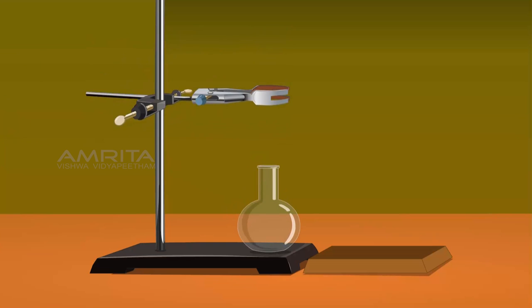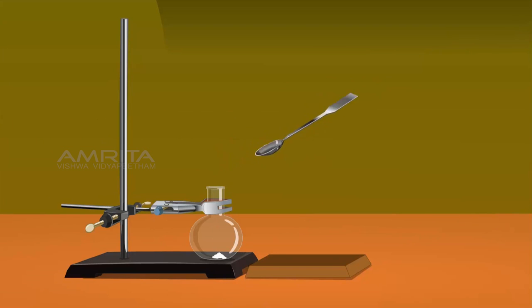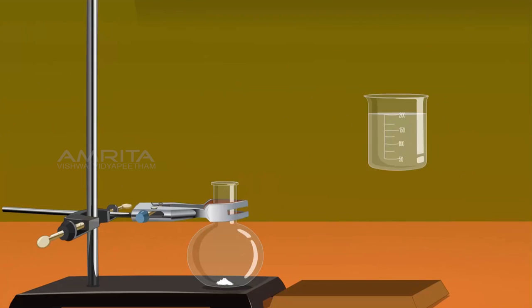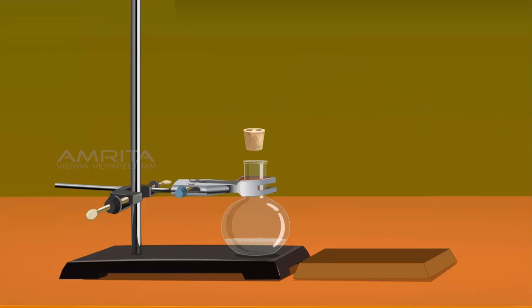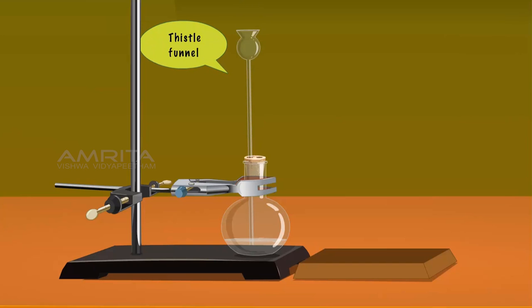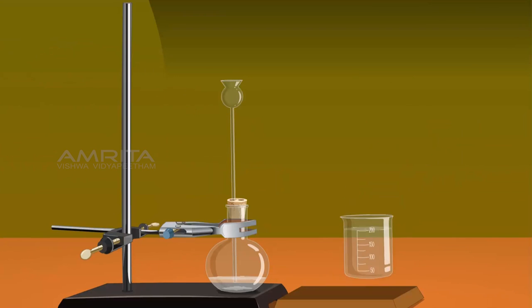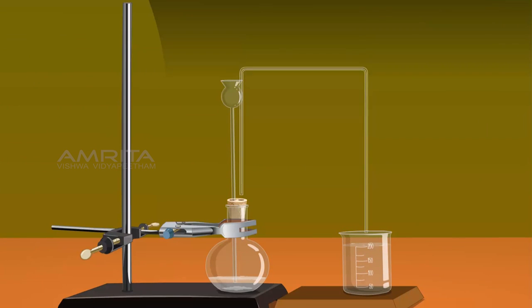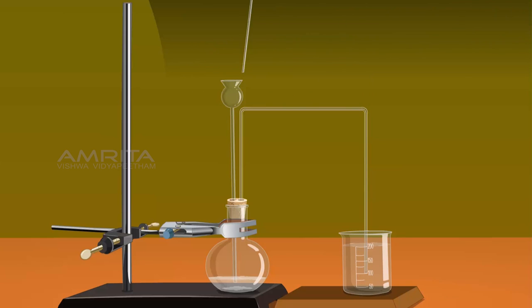Place the flat bottom flask on the clamp stand and clamp the neck of the flask. Using the spatula, take some sodium carbonate from the dish and put it into the flat bottom flask. Pour some distilled water into the flask. Cork the flask with a double board cork and insert the thistle funnel through one of the holes in the cork. Place the beaker containing lime water on another stand next to the flask. Carefully insert one end of the connecting tube into the flask through the hole in the cork, ensuring the tube does not touch the solution. Place the other end of the tube in the beaker containing lime water.